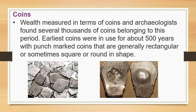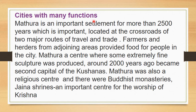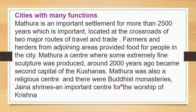Cities with many functions: Mathura is an important settlement for more than 2500 years. It is located at the crossroads of two major travel routes, and farmers from surrounding areas provided food for the people in the city. Mathura was a center where extremely fine sculpture was produced. It also became the second capital of the Kushana empire.